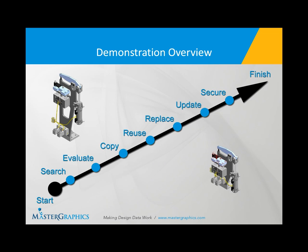Once we find some information, the next thing we're going to do is evaluate and understand that data — where is it used, what do we want to do with it, what are the relationships. Once we understand that information, we're going to do a copy design. We're going to replicate an assembly and reuse some information within that assembly so that we're not creating duplicate parts within Autodesk Vault. Without a DM application, that can happen, and you can have a lot of duplicate parts, making it very difficult to know which part is the correct one.